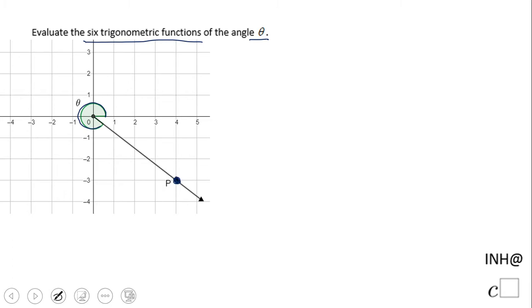We know that the terminal side contains the point P, which is 4 and negative 3. You can see that here.